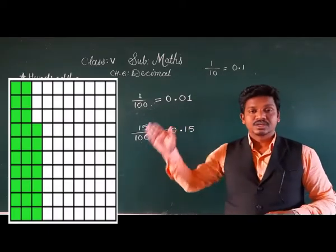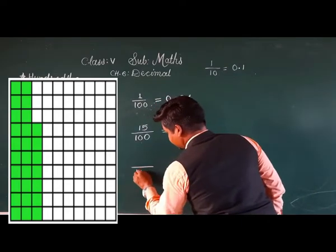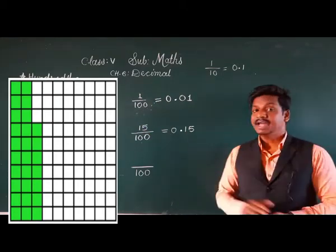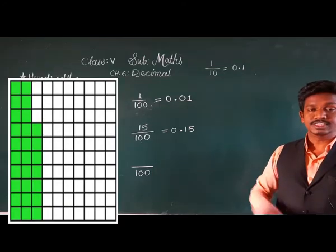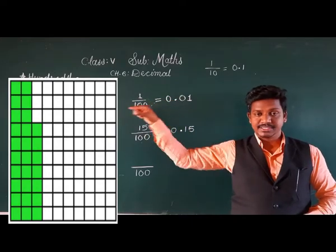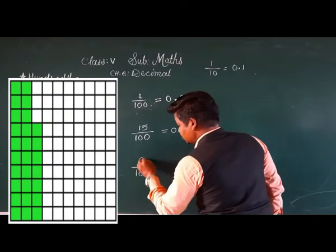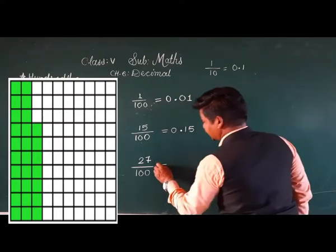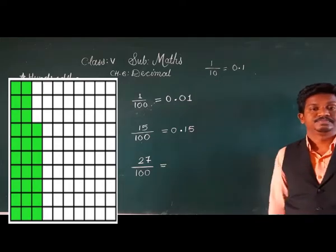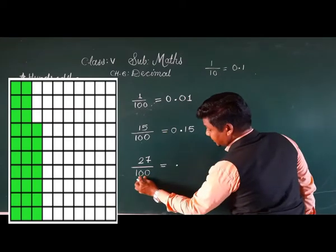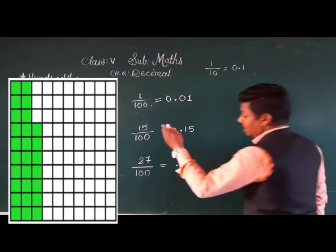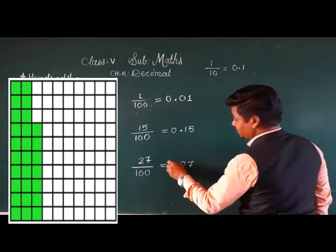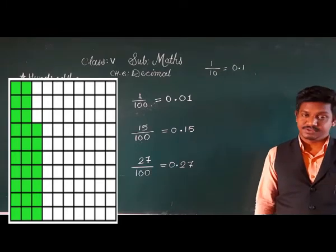Observe the third grid, also divided into 100 small parts. Out of 100, how many boxes are shaded? Each strip is of 10 — so 10, 20, and 7 more: 27 boxes are shaded. So the fraction is 27 upon 100. To write 27 upon 100 as a decimal: there are 2 digits in 27, so they come directly after the decimal point — 0.27.